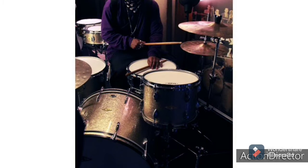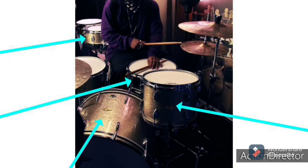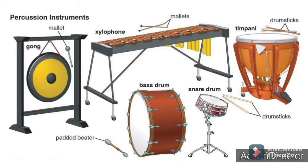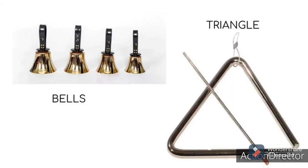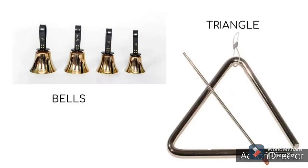Percussion instruments make sound from being struck. Often, the instruments will have a hollow body, which will amplify the sound. However, some percussion instruments make sounds in other ways. For instance, maracas make sound when shaken, while bells and triangles resonate at a specific frequency when hit.